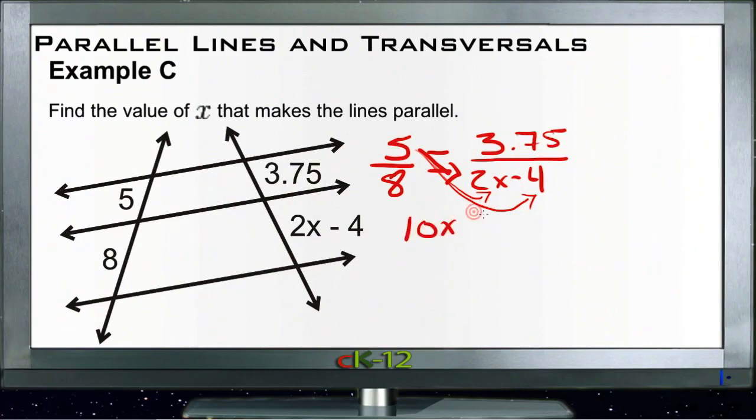And that will be equal to 8 times 3.75, which would be 30. Then we can add 20 to both sides. This will cancel. We'll get 10x equals 50.